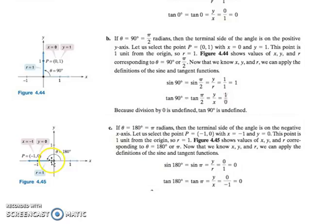For 180, so 180 is over here. Now we're going left 1, which is negative 1. And we're not going up or down, so that's 0. Now our radius, remember radius is always positive. So the radius is still 1.